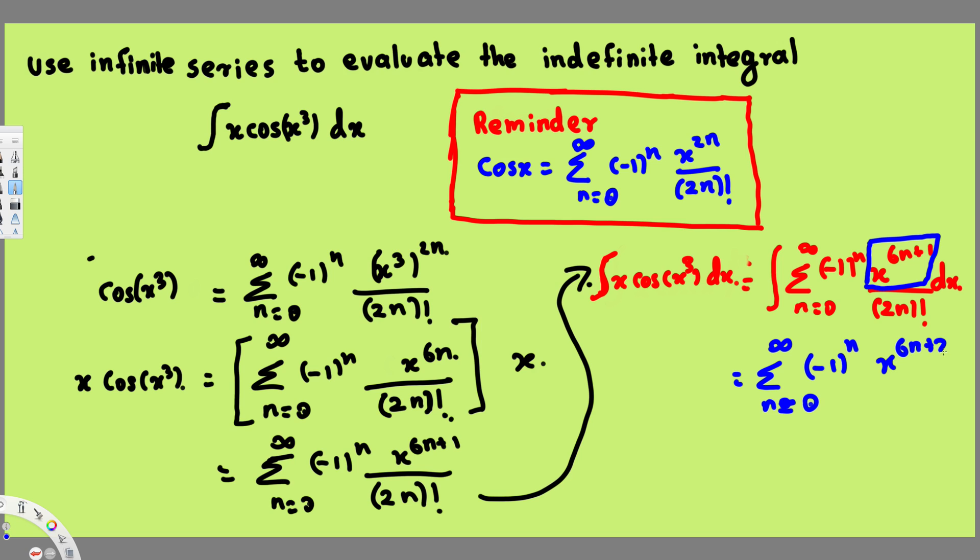...plus 2), because we are adding one more to the power and we have to divide by that power. So here we are going to have (2n)! times (6n + 2) plus constant. That's going to be the final answer. I hope this helps, thanks for watching.